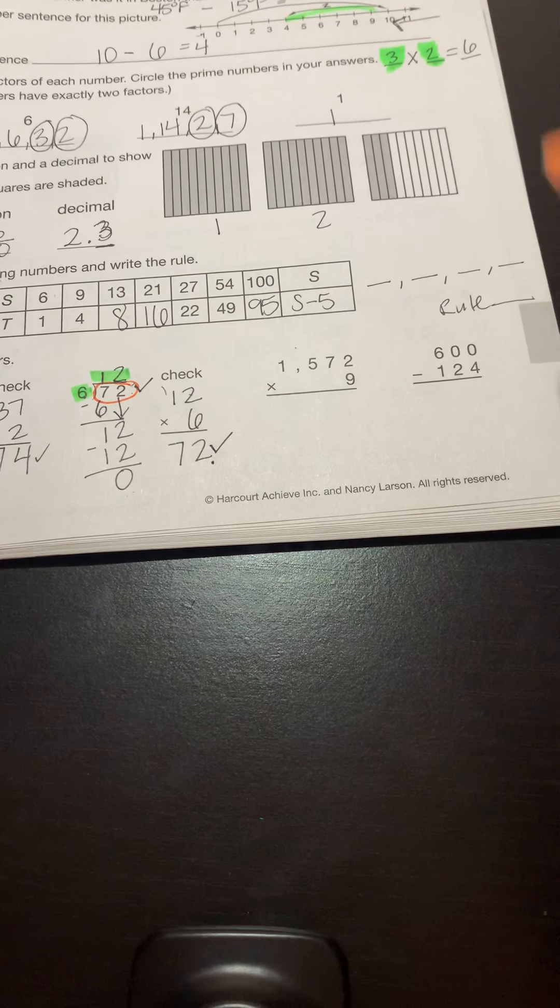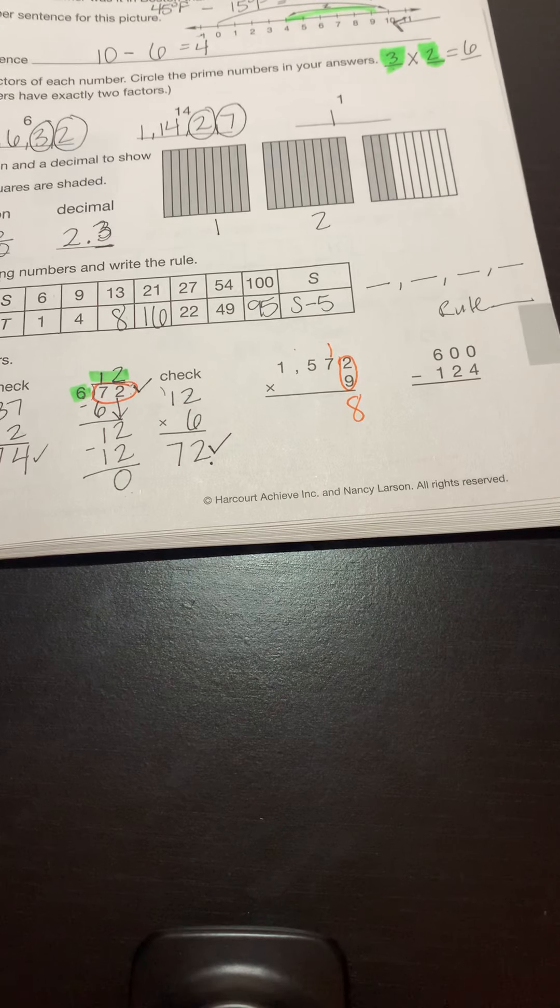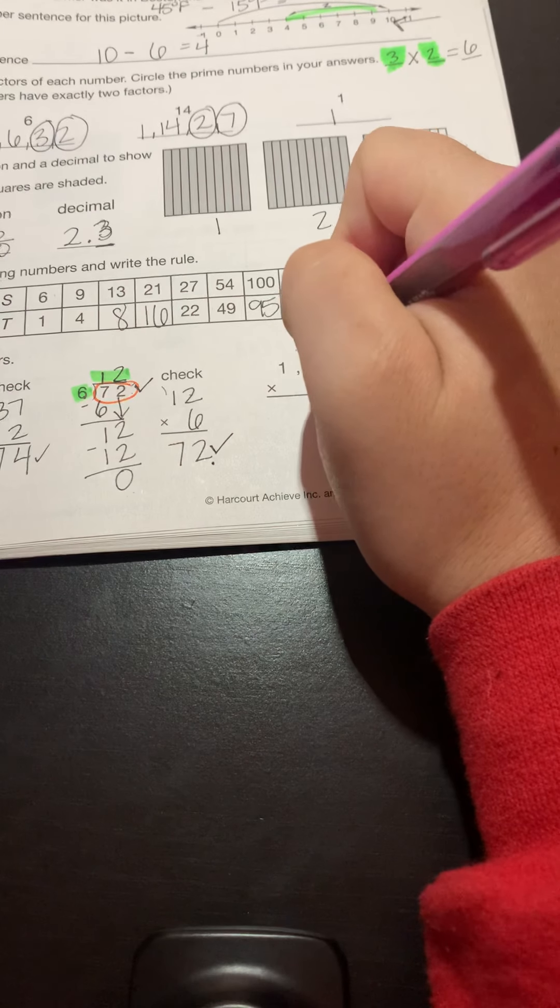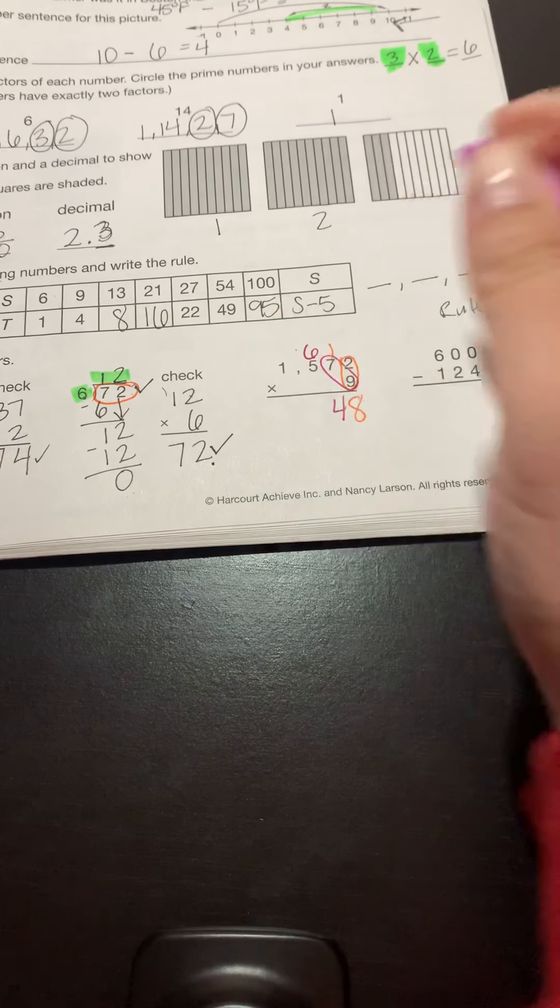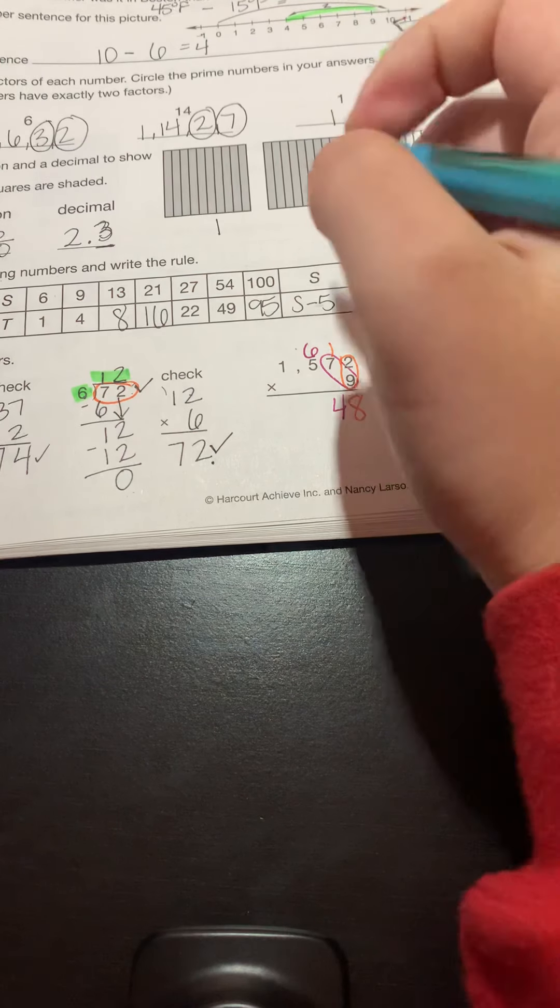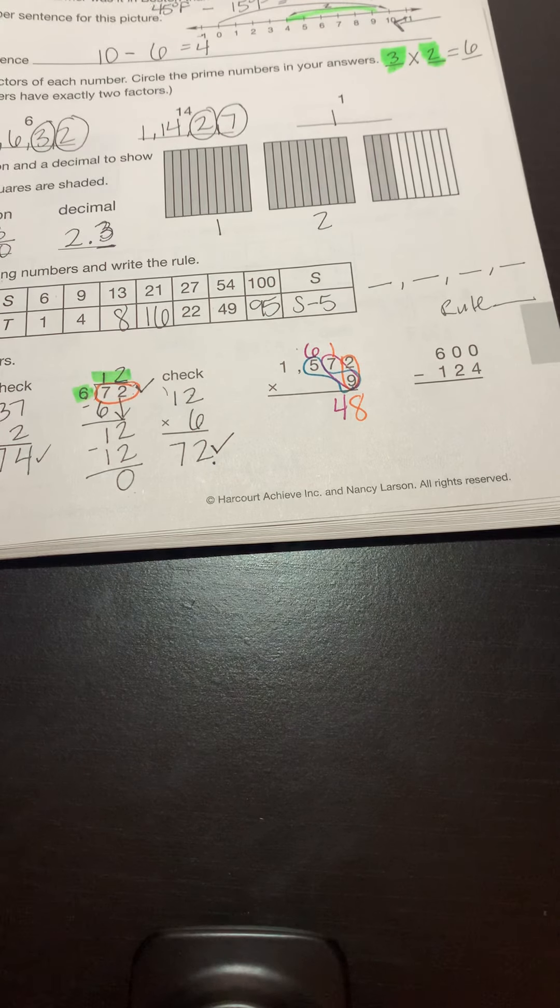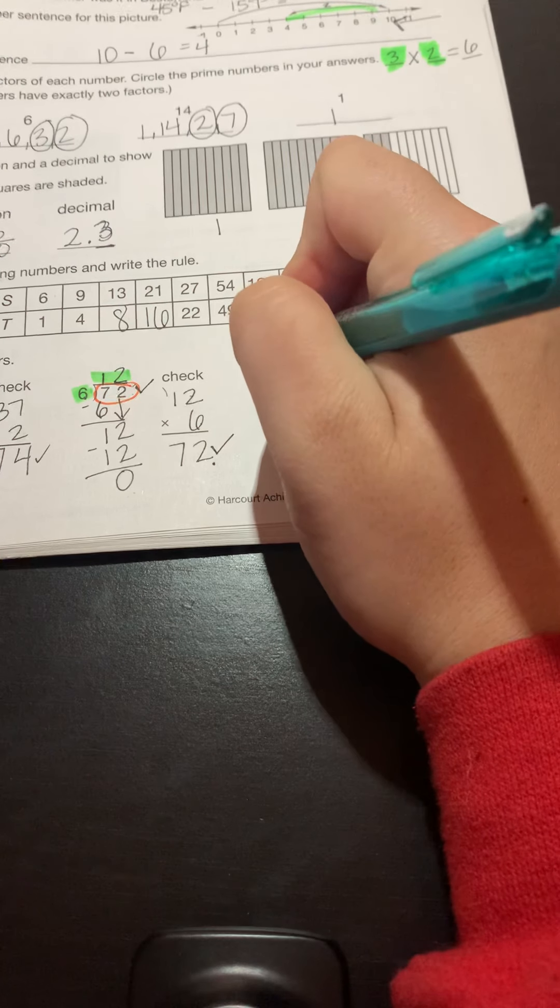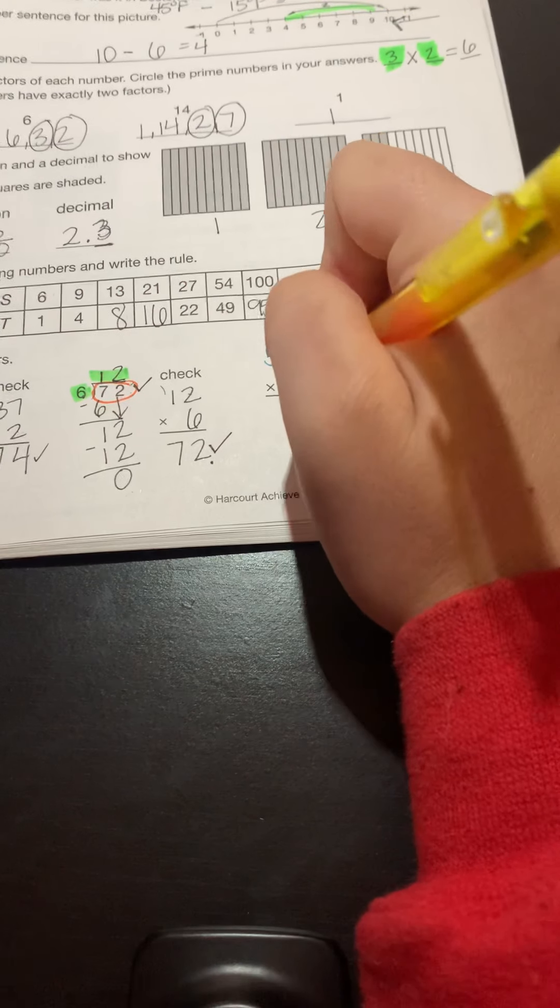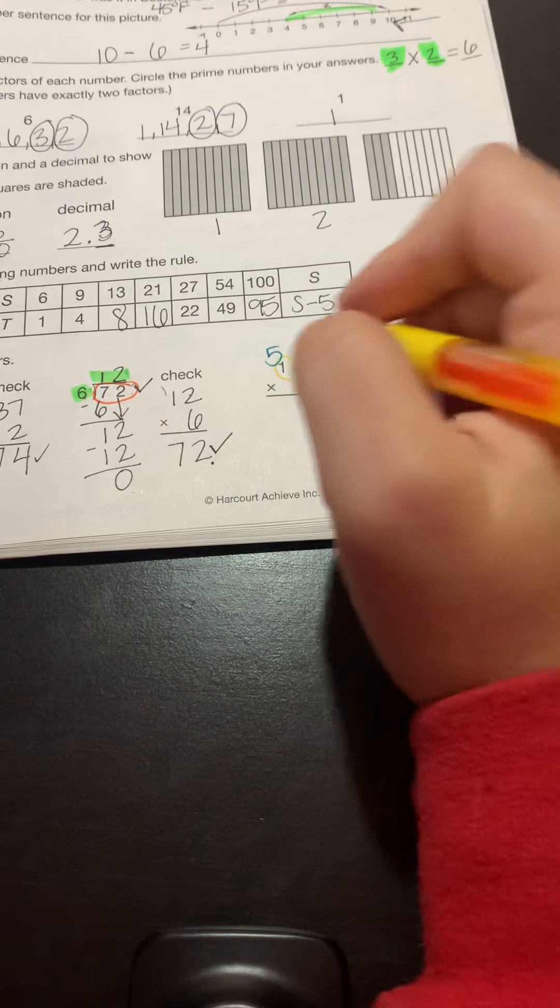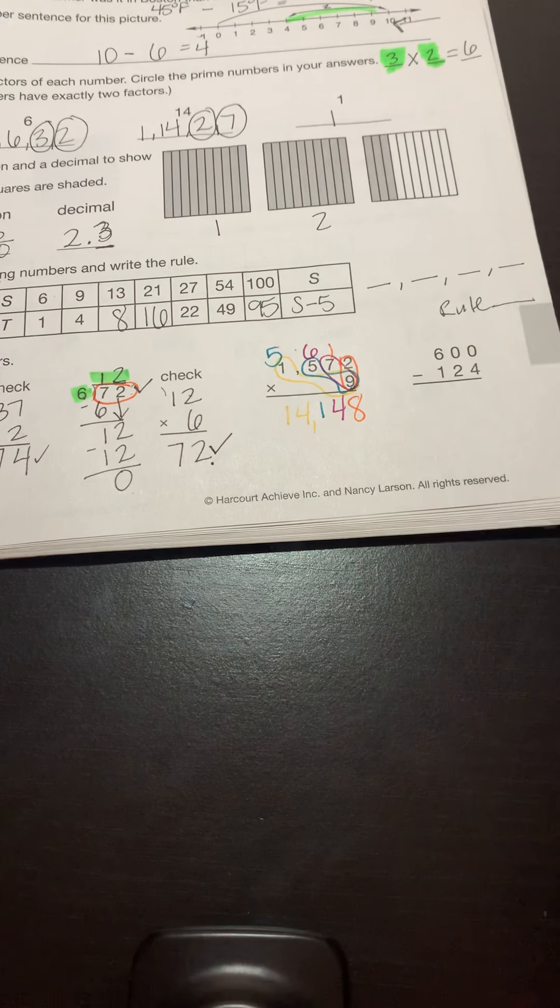All right. Multiplying here. Let's start with nine times two. 18. Drop my eight, carry my one. What's nine times seven? 63 plus one more. 64. Drop my four, carry my six. Next one, nine times five. 45 plus six gives me 51. And then now I have nine times one. Which is nine plus five more is 14. So I have 14,148 is my answer.